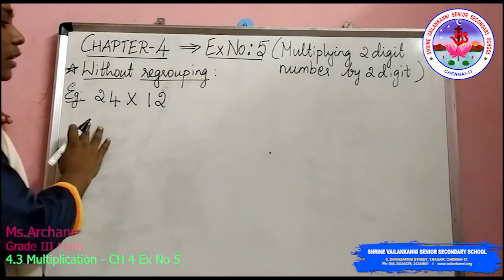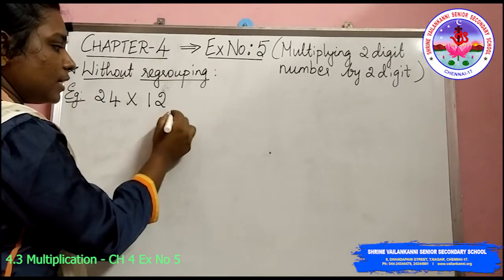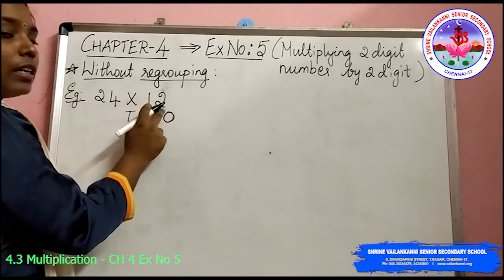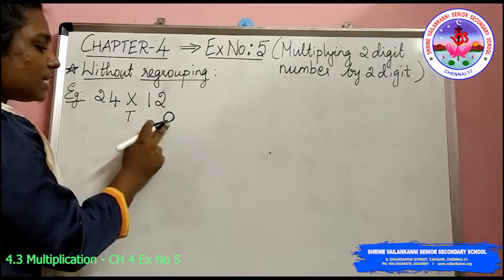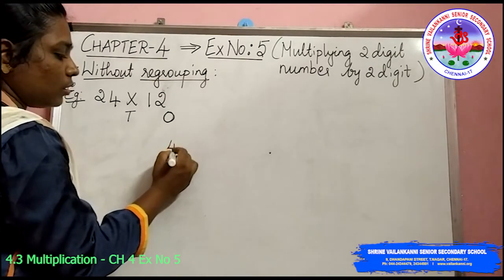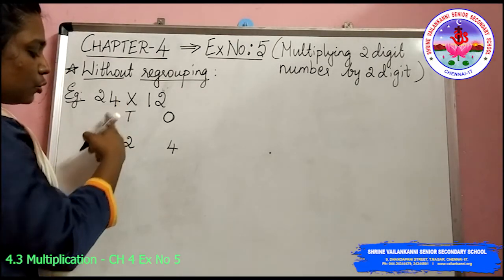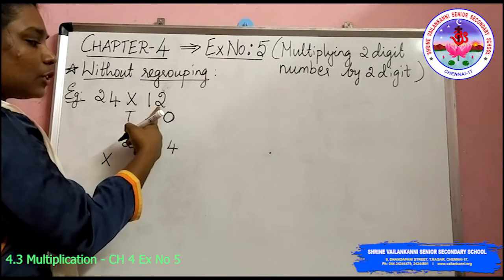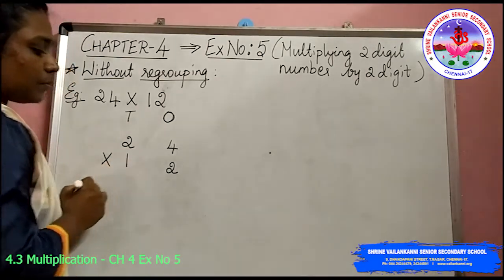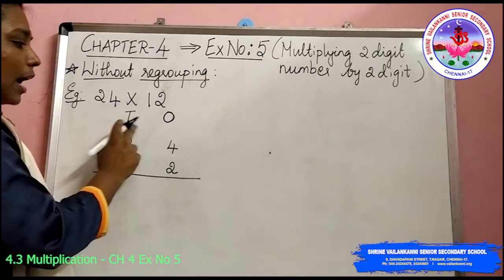So we will start with the format. First, do the place value — that is ones and tens. Since it is only two-digit by two-digit, I am writing only two place values: ones and tens. I am going to write 24 — four under ones, two under tens — multiplied by twelve. Twelve is a two-digit number: two comes under ones, one comes under tens. This is how you write under the place values.